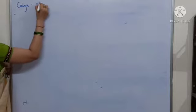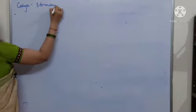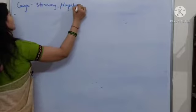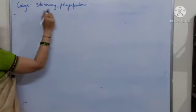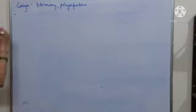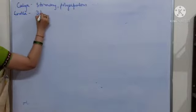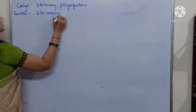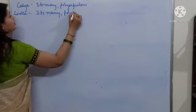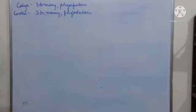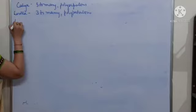Regarding the parts of the flower — Calyx has 3 to many sepals, and the condition is polysepalous, meaning the sepals are free. Corolla has 3 to many petals, and the condition is polypetalous, meaning the petals are not fused with each other.